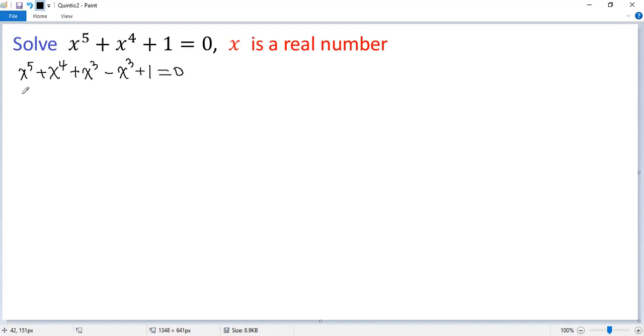Now take the common factor for the first terms, so we get x cubed times x squared plus x plus 1, and for the last two terms, x cubed minus 1, I write minus 1 cubed equals 0.